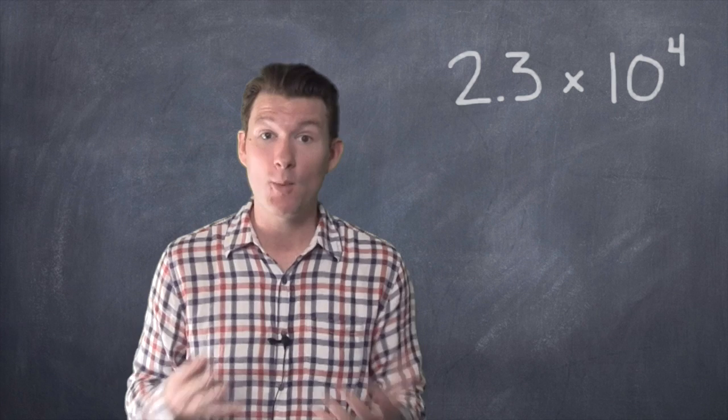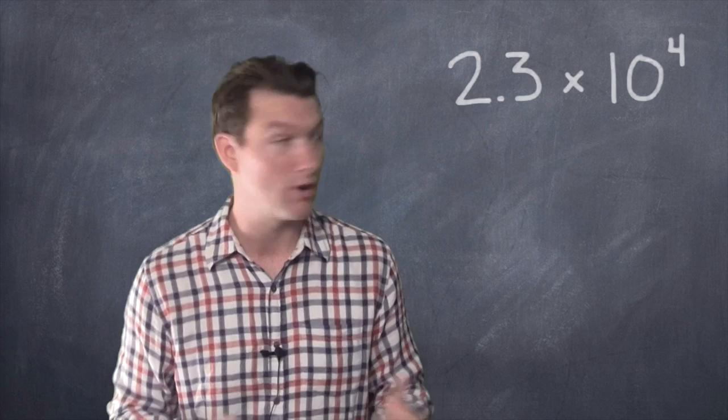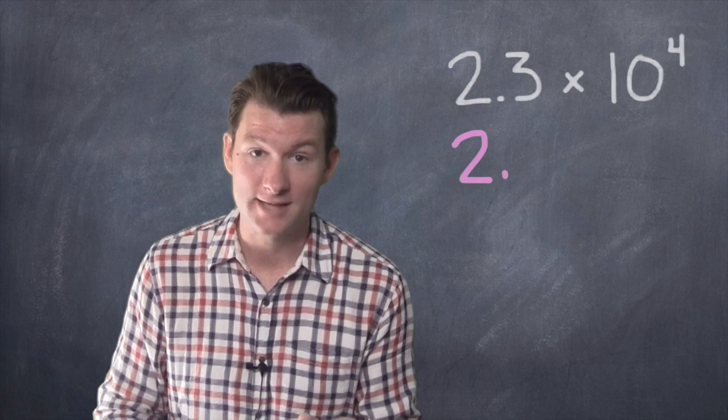So, you see that decimal point between 2 and 3? Now, we've got to move that decimal point to the right, and we have to move it to the right 4 spaces. And we know that because that's what that little 4 is telling us to do.